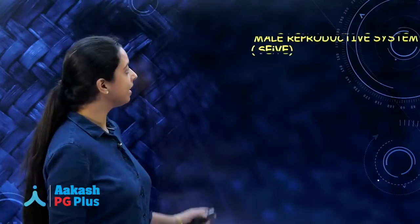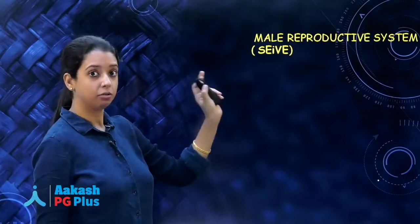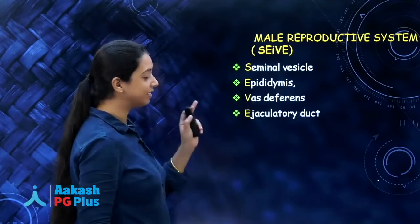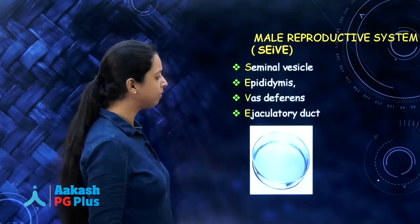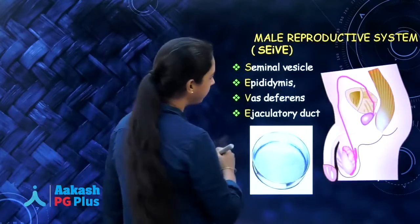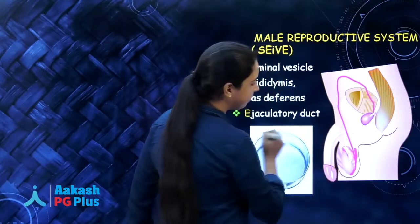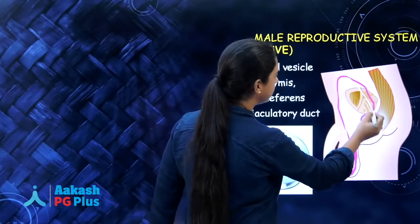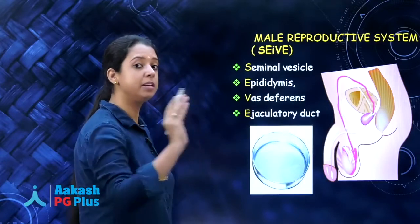What does it form in the male reproductive system? Remember it by the mnemonic SIEVE: S stands for seminal vesicle, I for epididymis, E for vas deferens, and E for ejaculatory duct. So the mesonephric duct forms the seminal vesicle, epididymis, vas deferens, and ejaculatory duct — all of these are formed by the mesonephric duct.